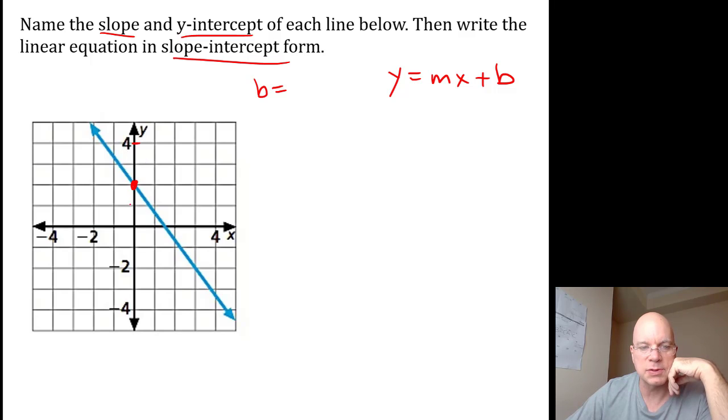if that's 4, then this must be 1, 2, this is 2. b equals positive 2. b is the y-intercept. That's why it's called slope-intercept form.